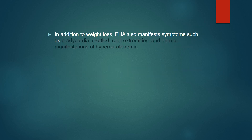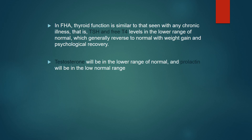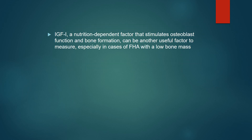In addition to weight loss, FHA also manifests symptoms such as bradycardia, cold extremities, and dermal manifestation of hyperkeratosis. In FHA, thyroid function is similar to that seen in any chronic illness — TSH and T4 levels are in the lower range of normal, which generally reverses with normal weight gain and psychological recovery. Testosterone will be low, TSH will be in the lower range of normal, and prolactin will be in the low-normal range. IGF-1 is a nutrition-dependent factor that stimulates osteoblasts and bone formation and can be another useful factor to measure, especially in FHA with low bone mass.